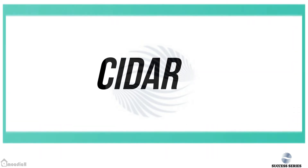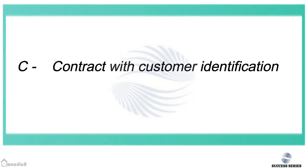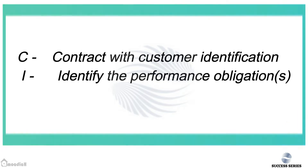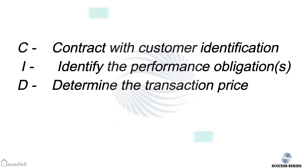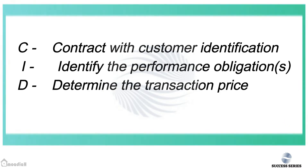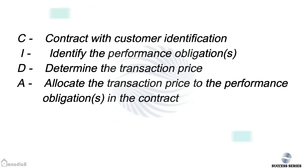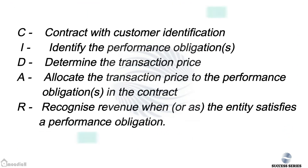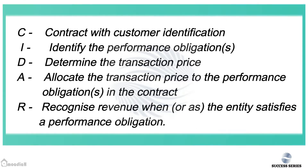To make it simpler to remember all five steps, you can use the mnemonic CEDAR. C stands for Contract with a customer identification, I stands for Identify the performance obligation, D stands for Determine the transaction price, A stands for Allocate the transaction price to the performance obligation in the contract.